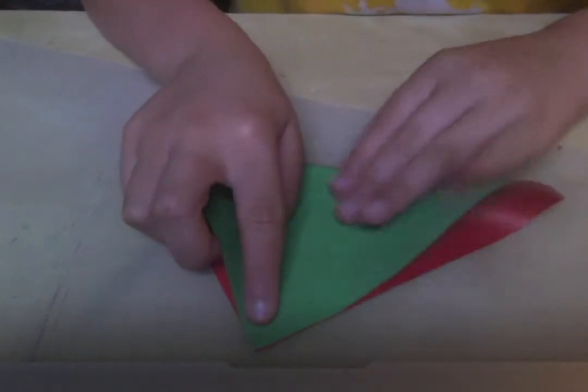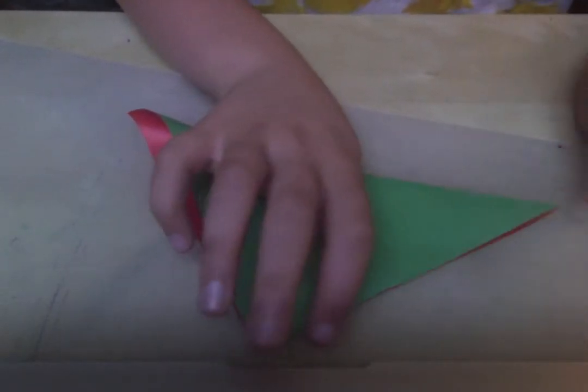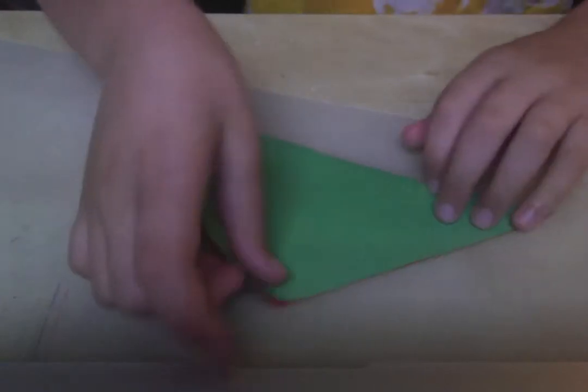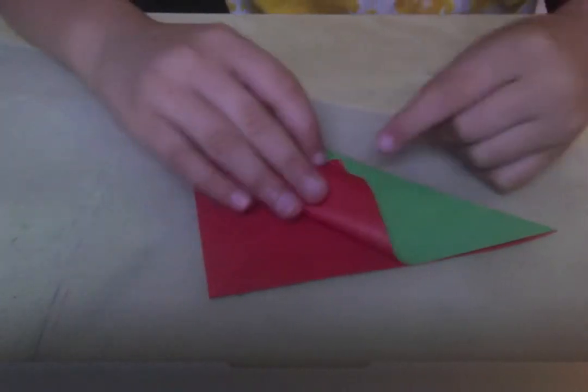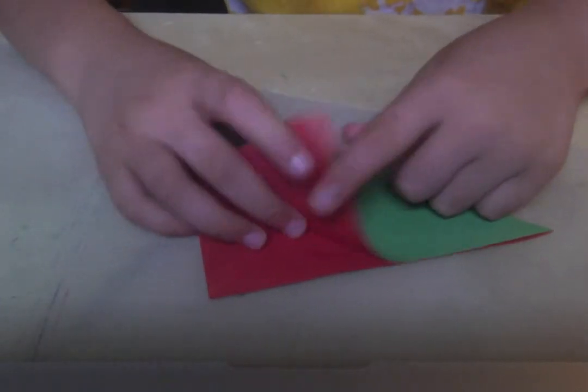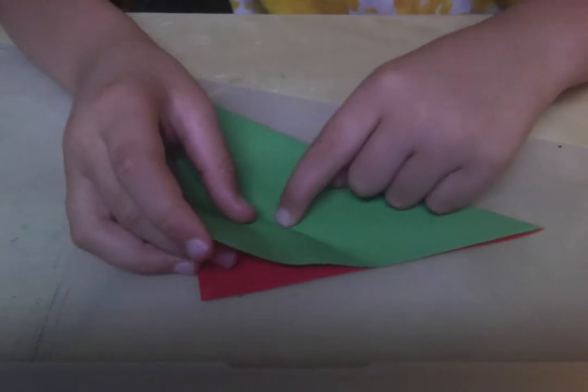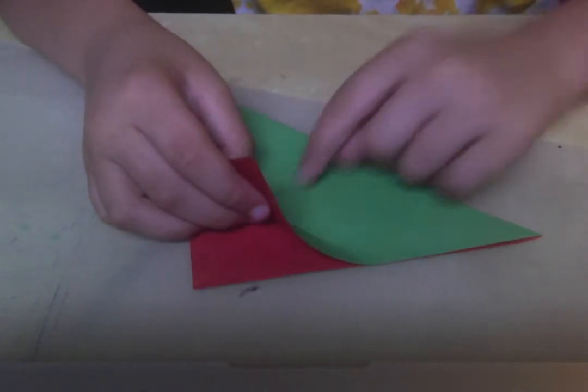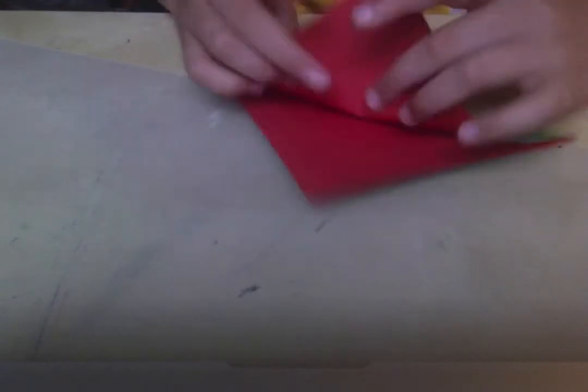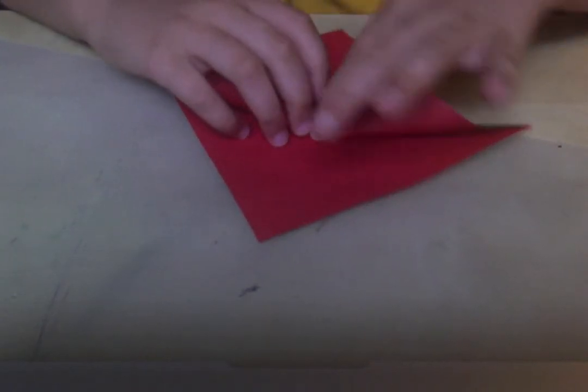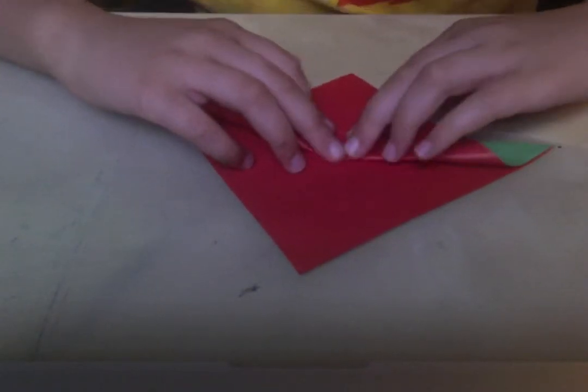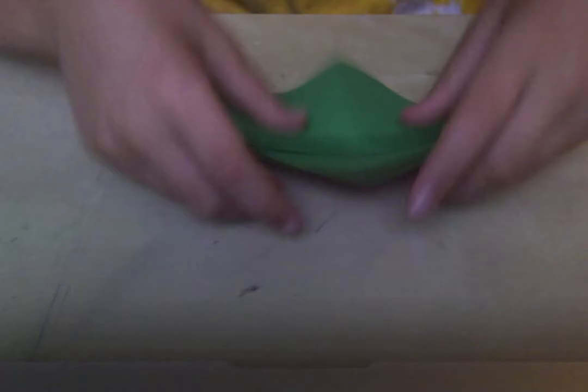And then rotate, fold it in the other direction. And then fold this point down to there—you can only make a pinch mark. Fold from this pinch. Take this pinch mark and put it to that edge. And then make another pinch mark. No, actually for this one, we make a complete fold.